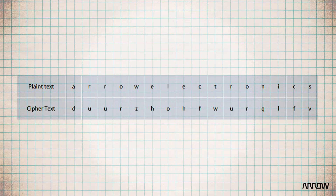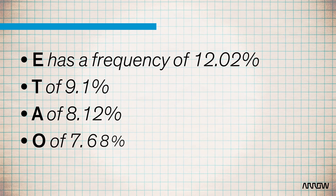With this pattern, 'electronics' is encrypted as D-U-U-R-Z-H-O-H-F-W-U-R-Q-L-F-V. This kind of cipher is breakable in a few minutes, as each letter has the same equivalent in the ciphertext, and that reveals a lot of information about the plaintext. A simple frequency analysis on text that is long enough reveals the shift immediately. In English, E has a frequency of 12.02%, T of 9.1%, A of 8.12%, O of 0.68%, and so on. Our example of Arrow Electronics is too short to match this frequency, but a few hundreds of words would do the job.